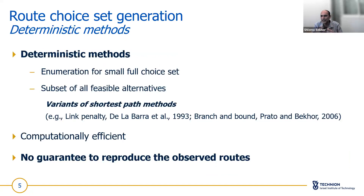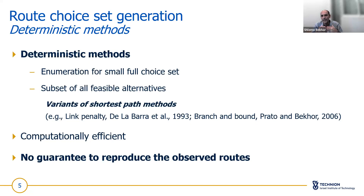Route choice generation methods can be broadly classified as deterministic or stochastic. If the network is not large, we could enumerate, but in most cases over the past 20 years we use a subset of shortest-path models — link penalty, link elimination, branch and bound, and so on. We also have more advanced choice models as discussed in previous presentations.